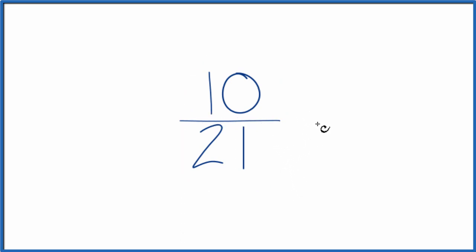These are the factors of 10 and 21. When we look at the factors of 10 and then 21, the only factor that's common between these is 1.